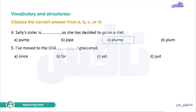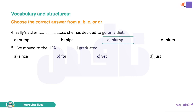Number five. 'I have moved to the USA since I graduated' — not 'for I graduated', not 'yet', not 'just'. The word 'since' (منذ) is followed by either a date, the beginning of an event, or a clause — usually in the simple past tense. 'Since I graduated' — منذ تخرجت.